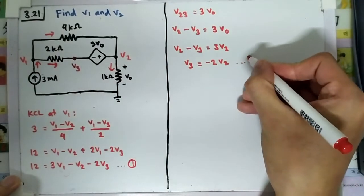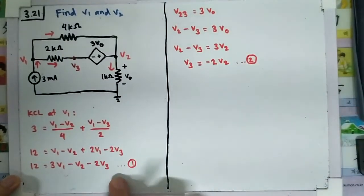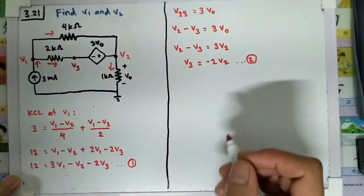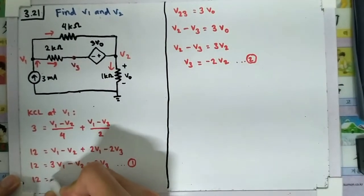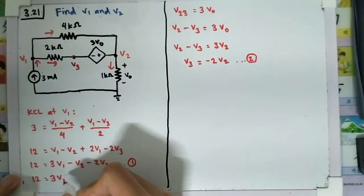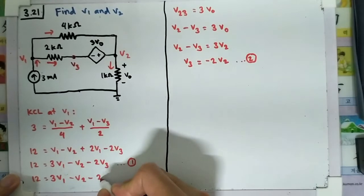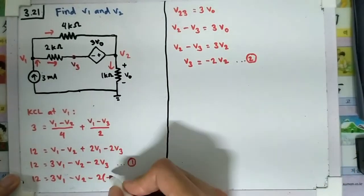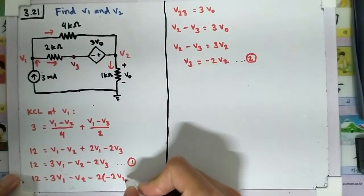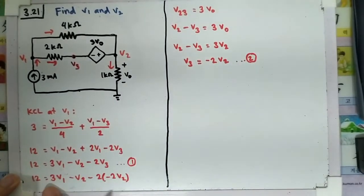We plug Equation 2 into Equation 1. So we have 12 equals 3v1 minus v2 minus 2 times (minus 2v2), which gives 12 equals 3v1 minus v2 plus 4v2.